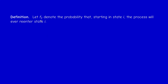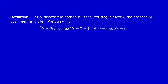Let F_{i,i} denote the probability that, starting from state i, the process will ever re-enter state i. Then F_{i,i} is exactly the probability that T_i is finite, given X_0 = i. Equivalently, it is one minus the probability that T_i equals plus infinity, given X_0 = i, since T_i is either finite or infinite — these two events are complementary.